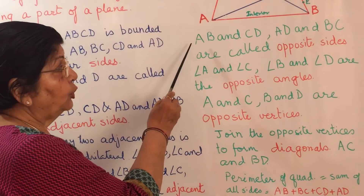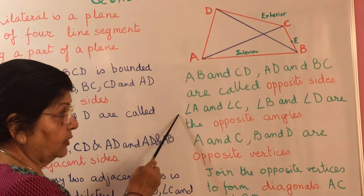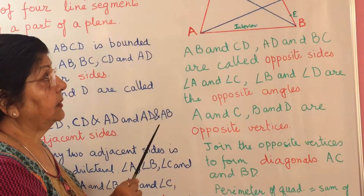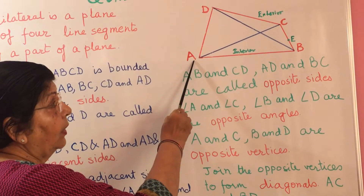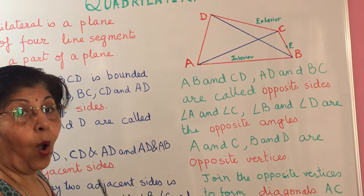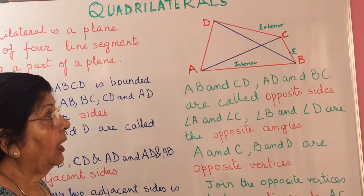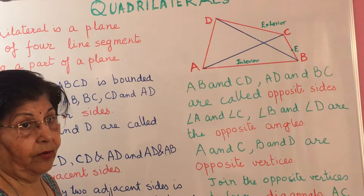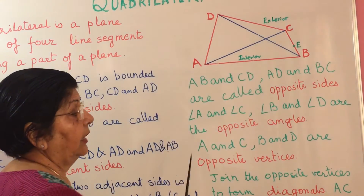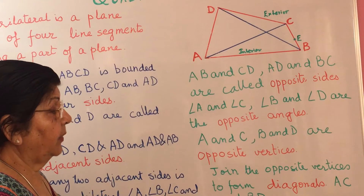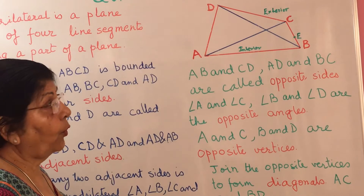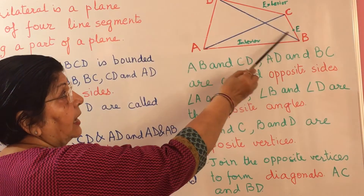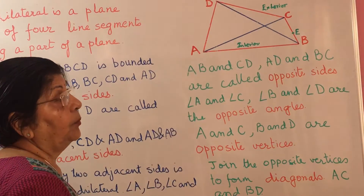So a quadrilateral has two pairs of opposite sides and two pairs of opposite angles. Now considering the vertices: vertex A and vertex C are opposite to each other. When we join two opposite vertices, we get a diagonal. Joining A and C gives diagonal AC. In the same way, joining opposite vertices B and D gives the second diagonal BD.